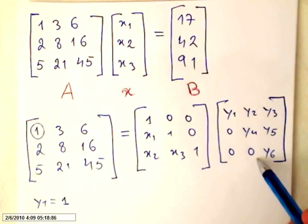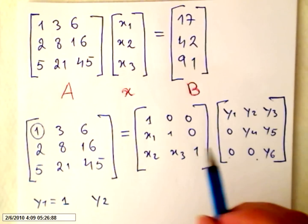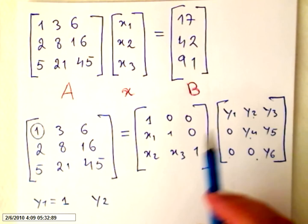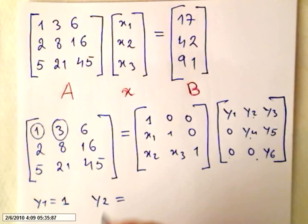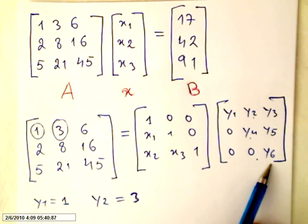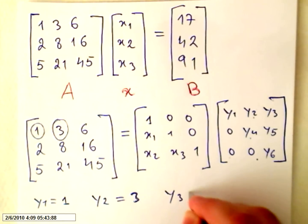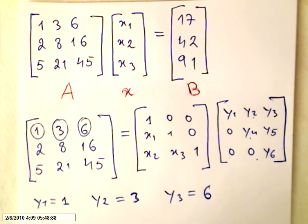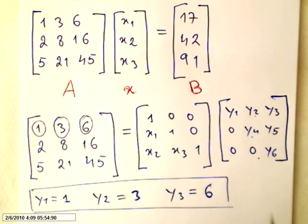First line times the second column, we will get y2. 1 times y2, 0 times y4, so these numbers will disappear, they are multiplied by 0. So y2 equals this number, y2 equals 3. And first line, last column, so it will be y3, y3 equals this number, it will be 6. We already have found three variables of these matrices.